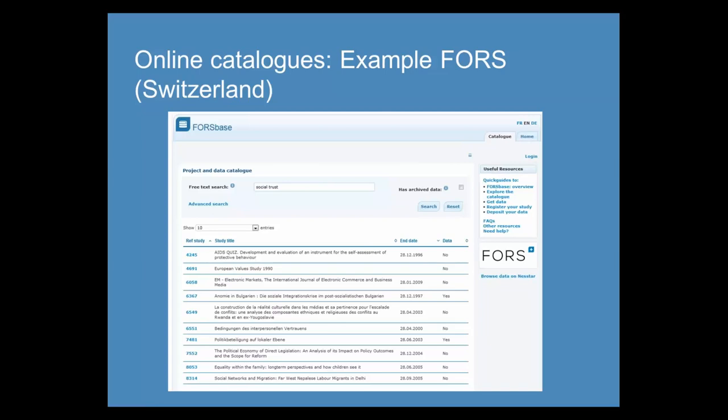Here is another example from FORS in Switzerland. Their online platform, FORSbase, allows researchers to register research projects and to store and share their data. Others can then obtain information about social science studies and access data. The list of studies tells you whether there is archived data, and there is also an option to search just for entries with data.